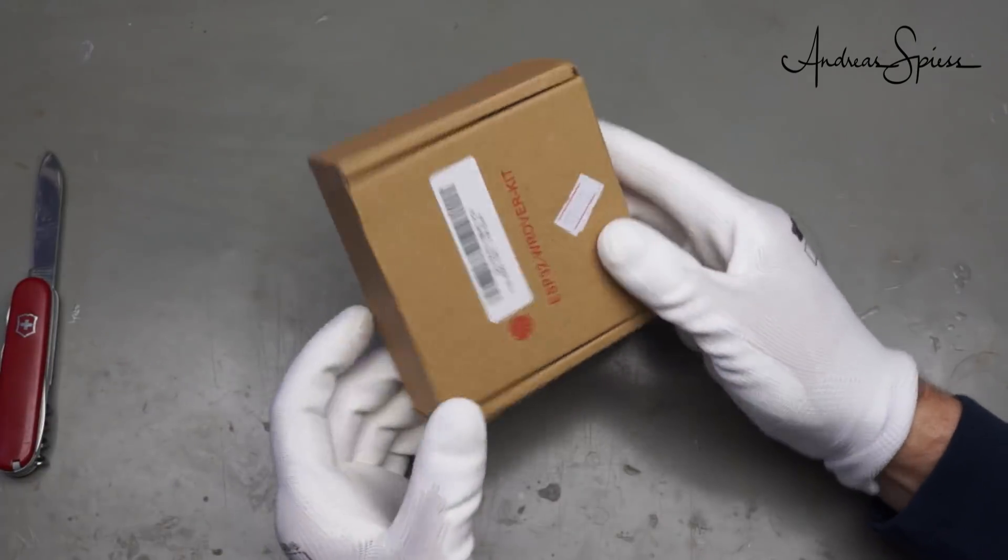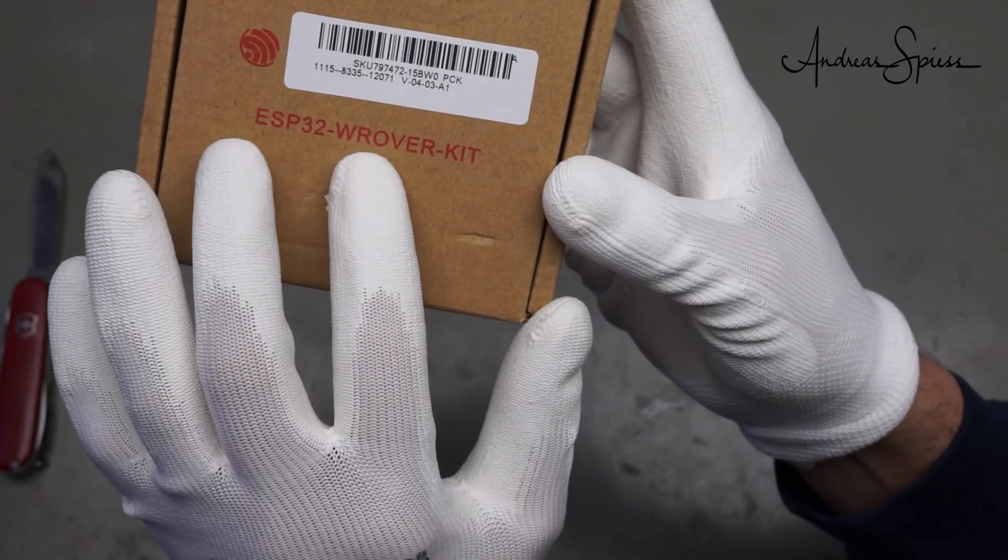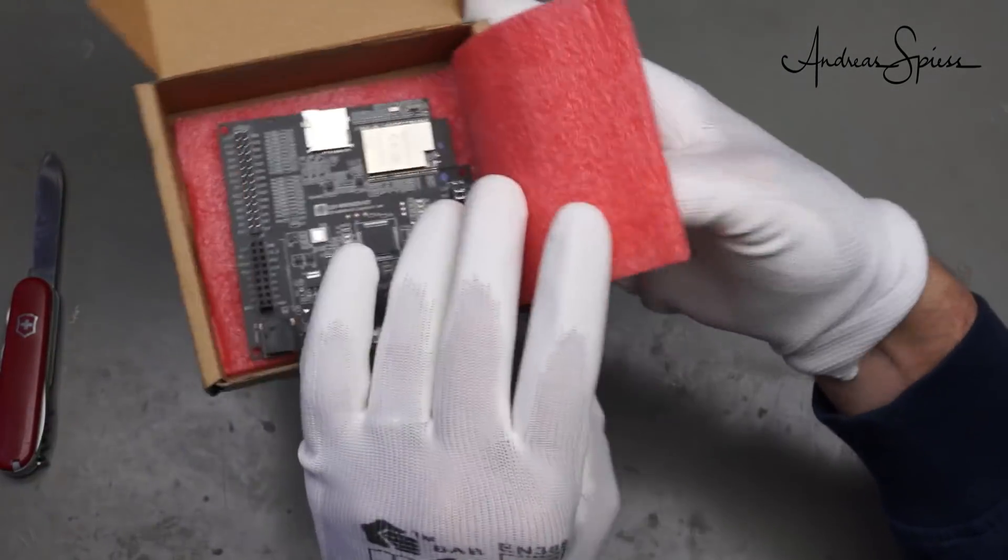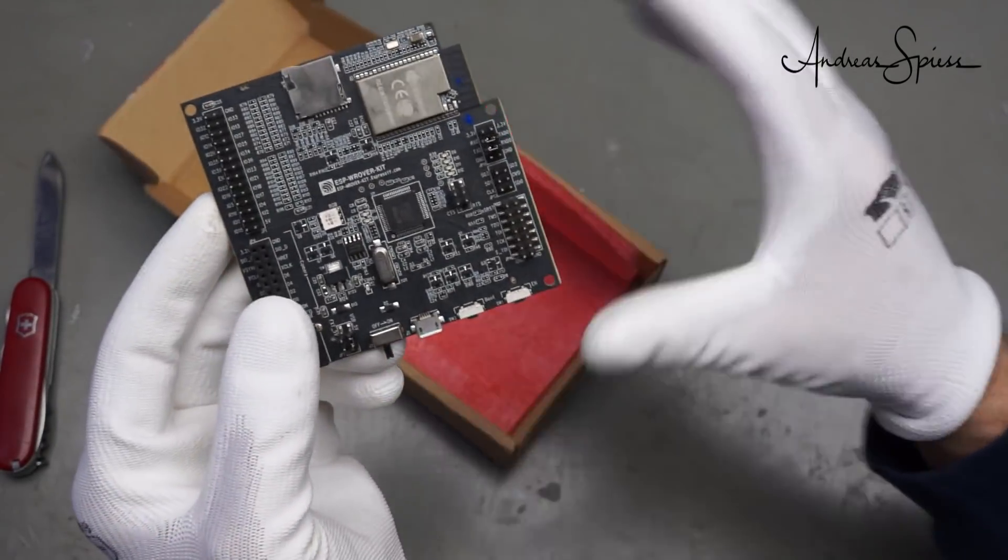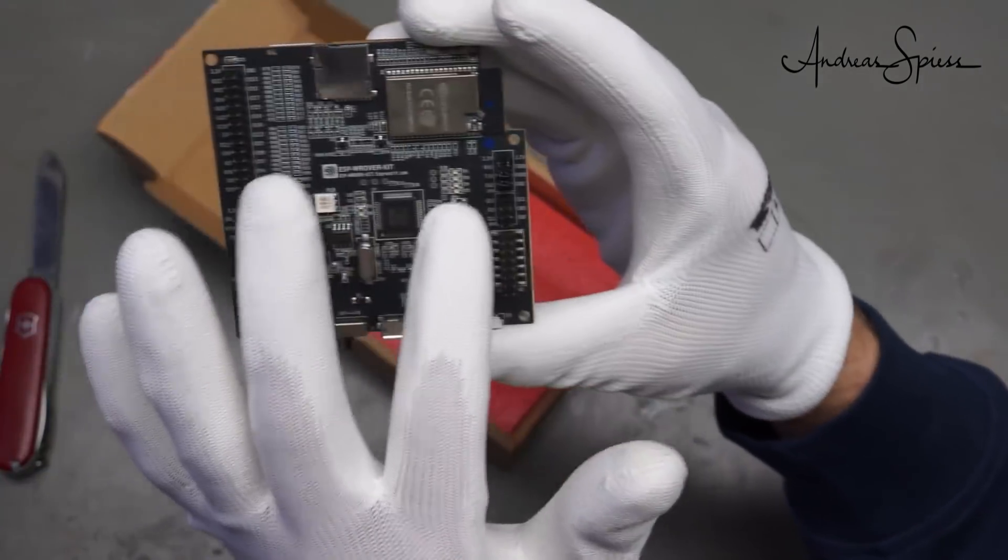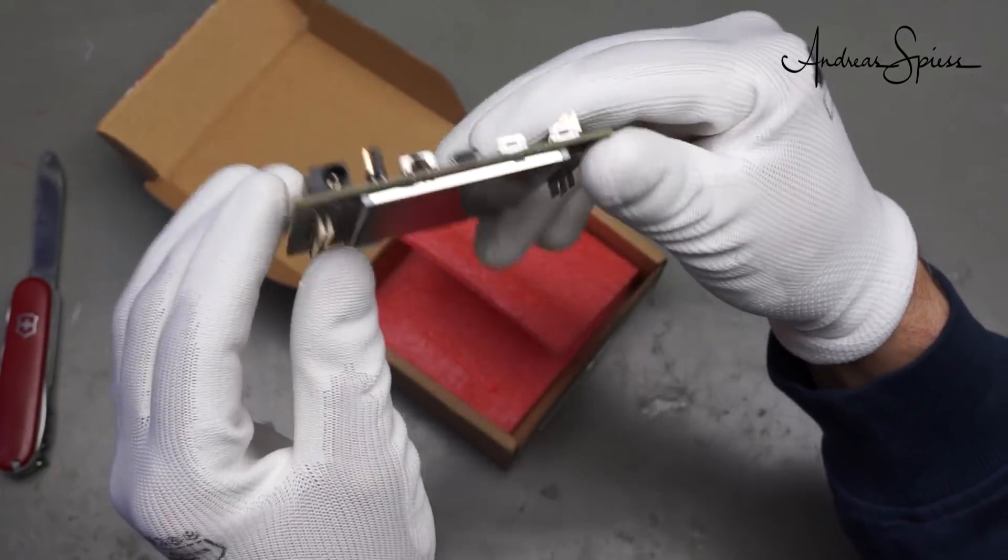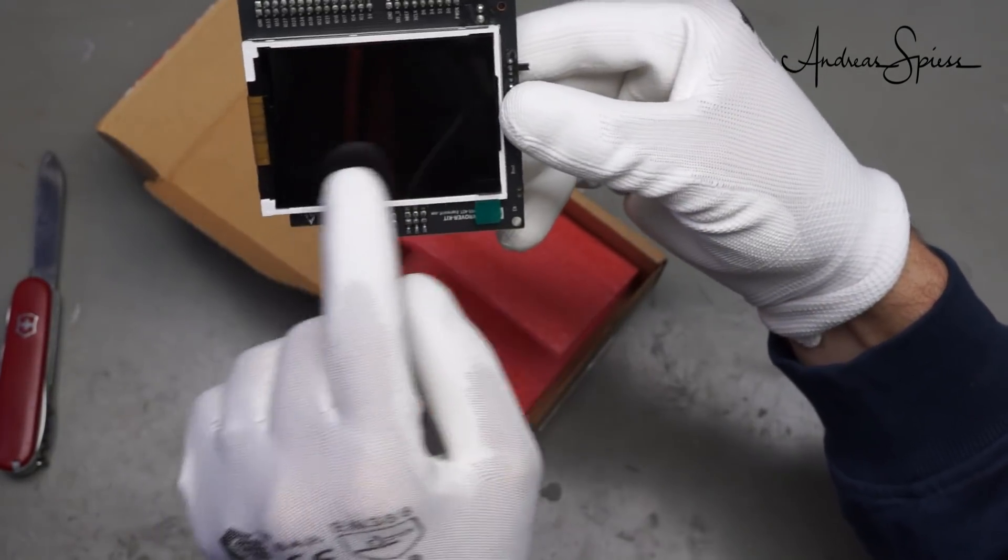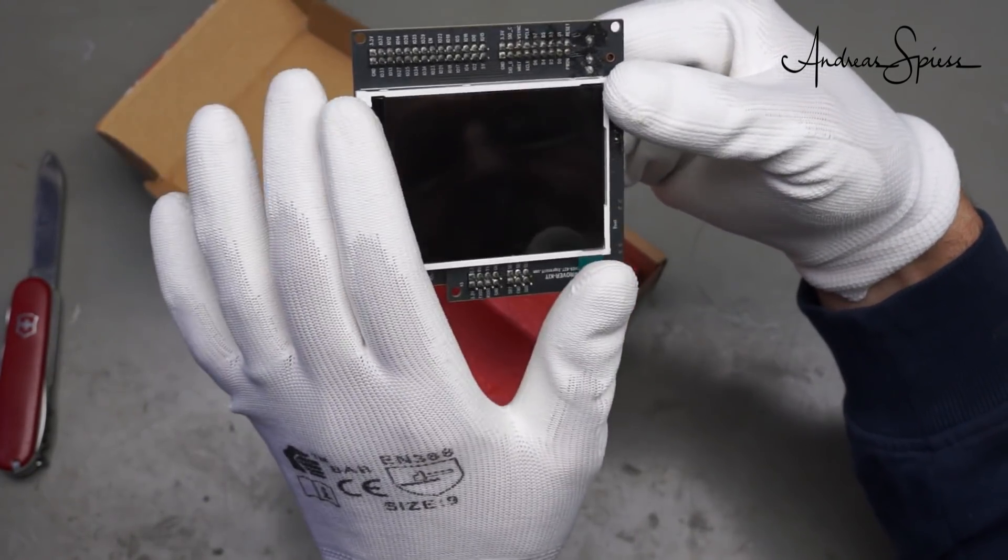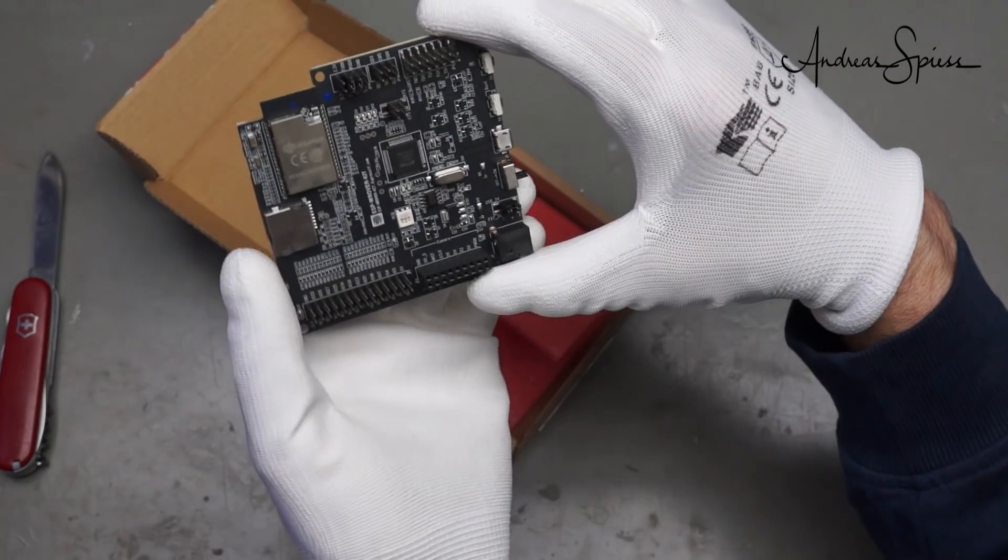This one here does not need a Swiss Army knife. It is already open. And it is an ESP32 Rover kit. I bought this because some of the viewers asked me to check it out. It is a very expensive board. And has many things on it. Also lots of connections here and here. And here is the ESP32 with an SD card reader. And if we turn around, we see this is why it is quite expensive. It has also a LCD screen on it. And we will see how this works. It is about $50 or more. So I have to pay attention that I do not brick it.